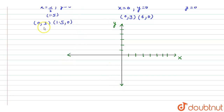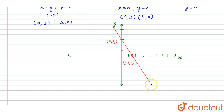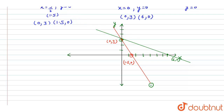We put the points in the coordinate system. For Equation 1, we plot (0, 3) and (1.5, 0), then join these two points — this is Equation 1 line. For Equation 2, we plot the same (0, 3) and (6, 0), then join these two points — this is Equation 2 line.